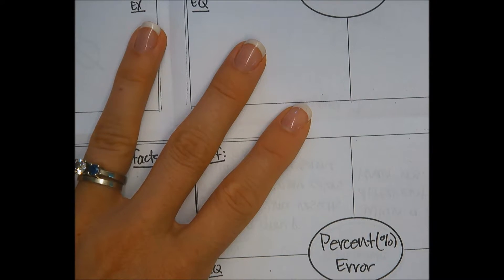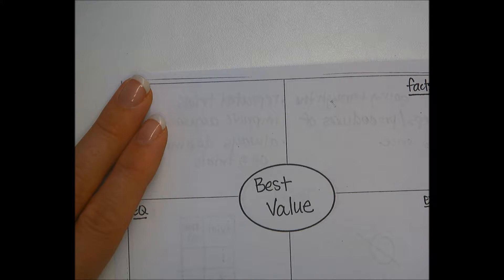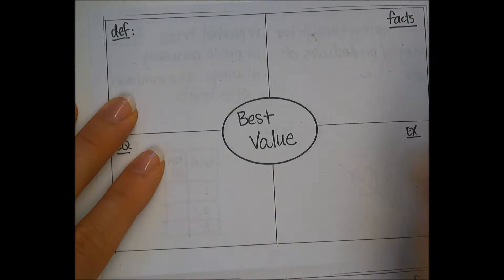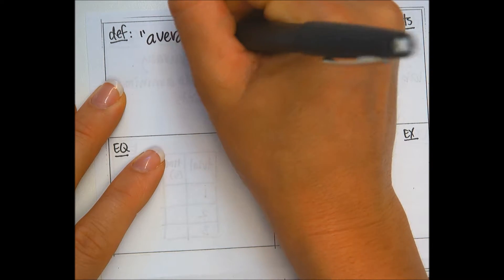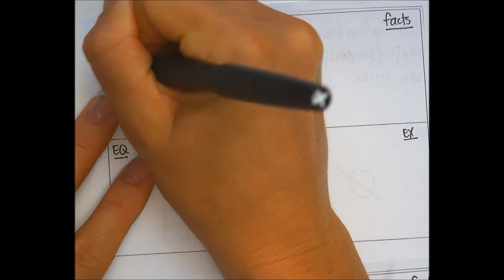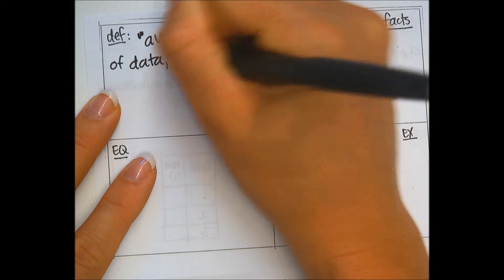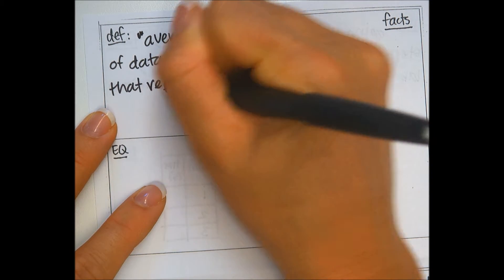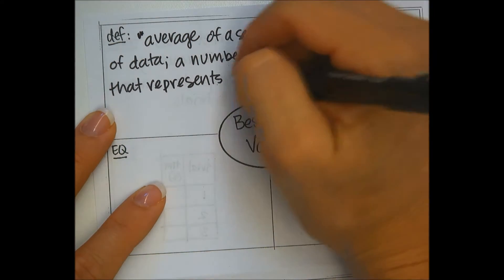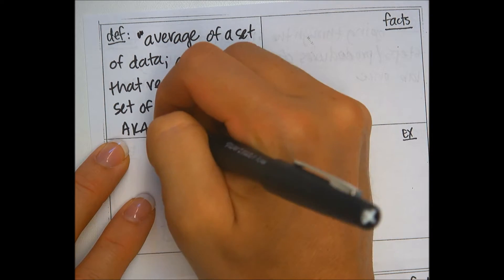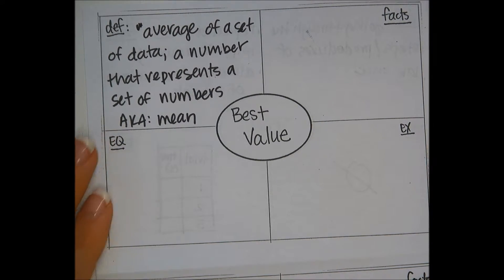We're going to start on the top left side where it has 'best value.' Best value might be a new term the way it's written here, but it's probably not actually new to you. The best value is the average of a set of data, and it's a number that represents a set of numbers. It's also known as a mean — you might have called it that in math class. You will also see it written as BV.